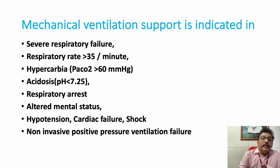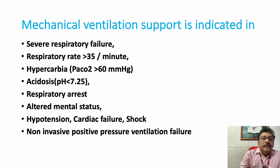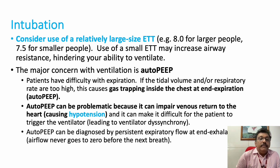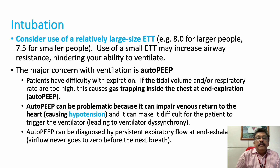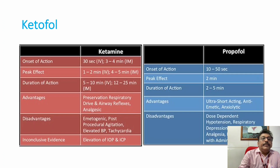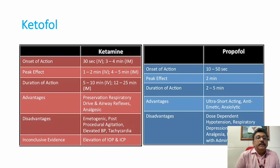Mechanical ventilation is indicated in severe respiratory failure with a respiratory rate above 35/min, hypercarbia, acidosis, respiratory arrest, altered mental status, hypotension, cardiac failure, shock, or NIV failure. When intubating, consider a larger-size tube and be aware of auto-PEEP, which can reduce venous return to the heart and cause hypotension. Ketamine combined with propofol — 'ketofol' — can be used as an induction agent during intubation.